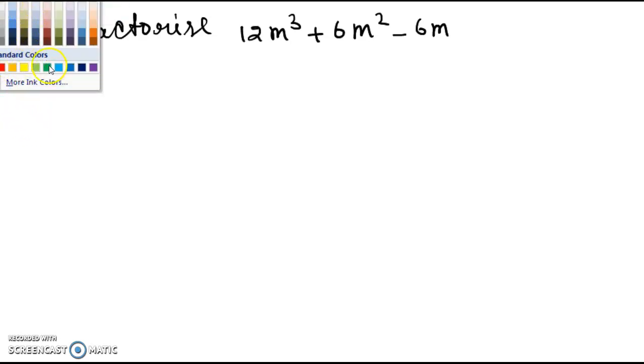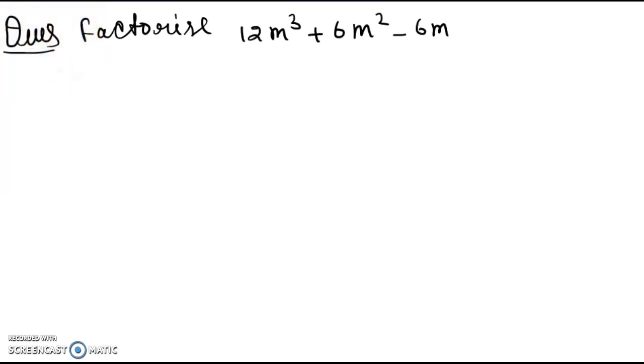So I have a question. Factorize 12m cube plus 6m square minus 6m. Students, this question is easy and you can solve within few minutes. So let's look at the solution.